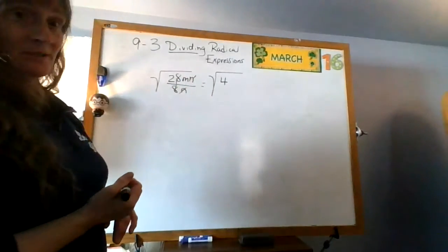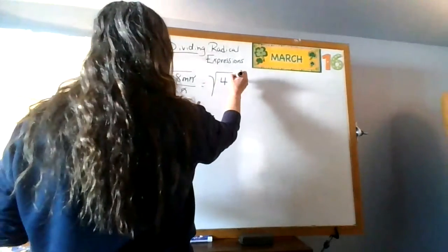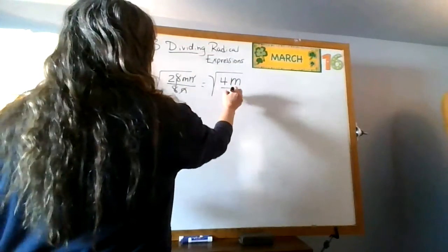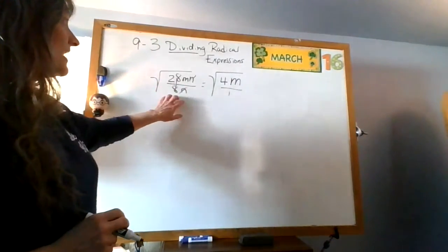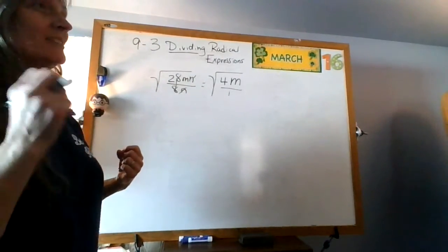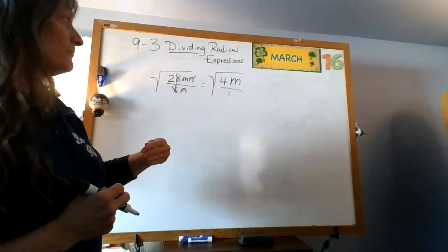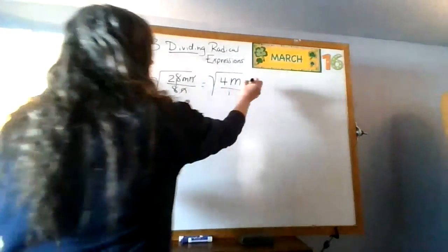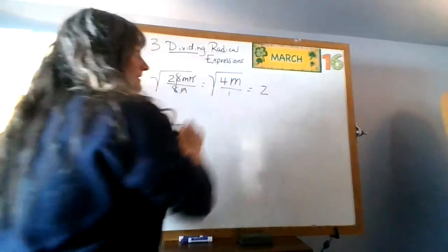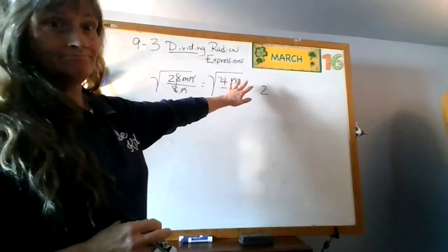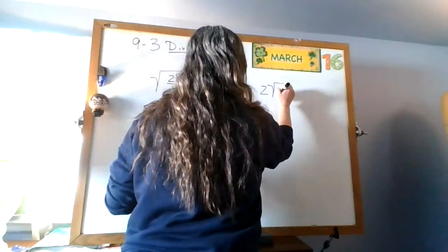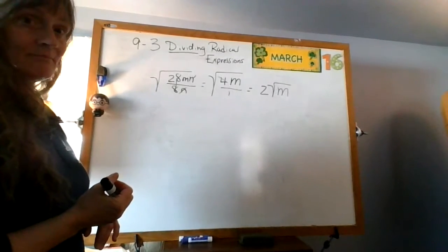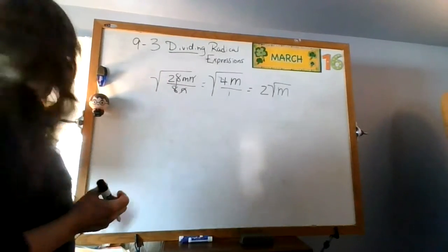So I am left with 4m on the top. Since I have divided 8n into 28mn, I get 4m. Now I have a perfect square. What is the square root of 4? That would be 2. What about m? No perfect square there, so it remains inside. My answer is 2 times the square root of m. That is one way that I can do this.